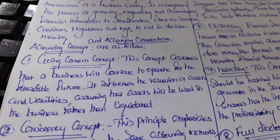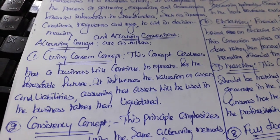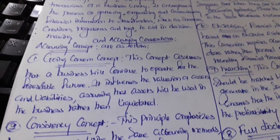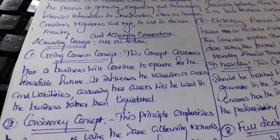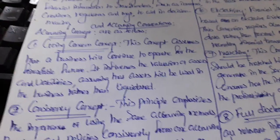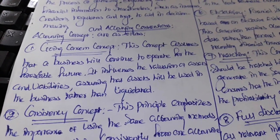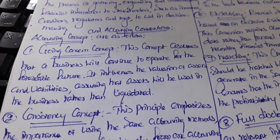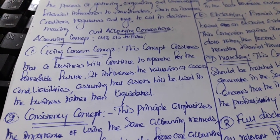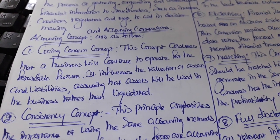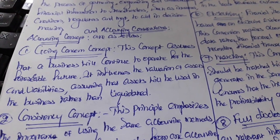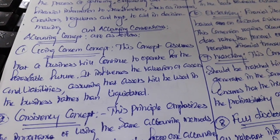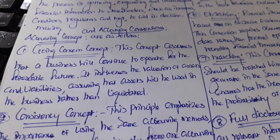Under the going concern concept, the accountant will record financial transactions assuming the business is ongoing. It influences the valuation of assets and liabilities, assuming that assets will be used in the business rather than liquidated.